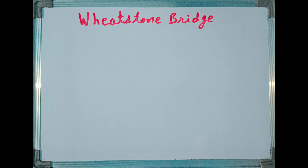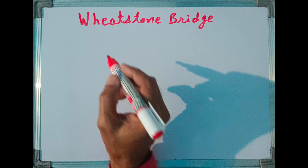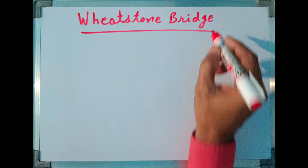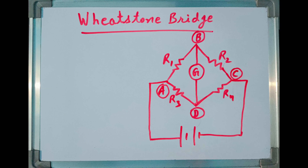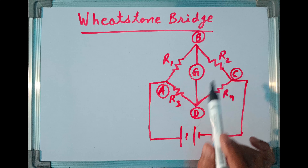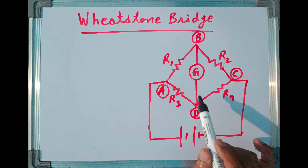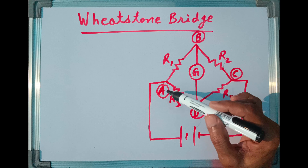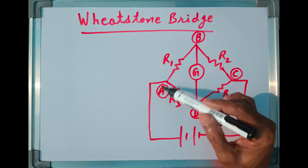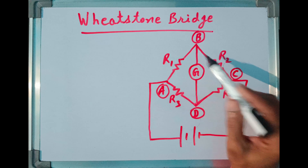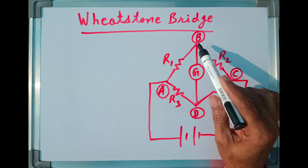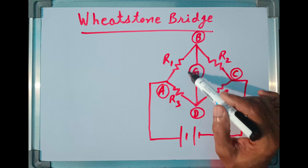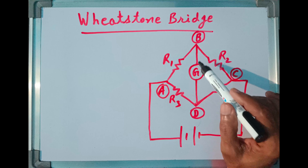In this video, I will share some very important points about Wheatstone Bridge circuit. Wheatstone Bridge consists of four resistances R1, R2, R3, R4 as shown in this figure. This circuit can be called as circuit ABCD. This closed circuit is nothing but Wheatstone Bridge. This connection between B and D through galvanometer is called Bridge R.